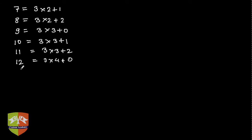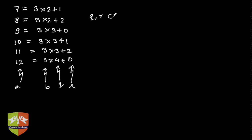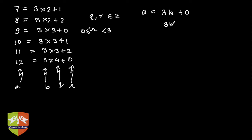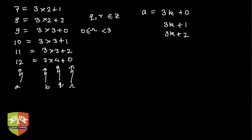In the language of Euclid's division lemma, b is 3, q and r are integers, r is greater than or equal to 0 and less than 3, so the maximum value of r is 2. To generalize: any integer a can be expressed as 3k, or 3k plus 1, or 3k plus 2.